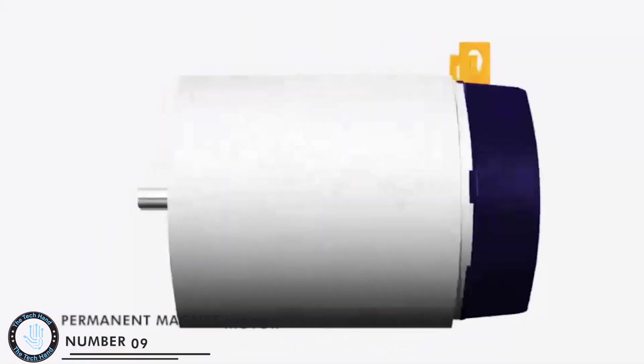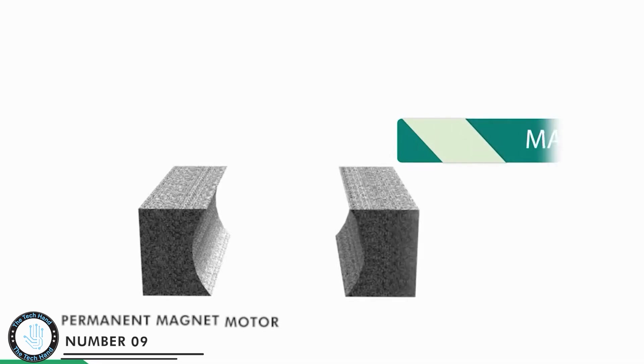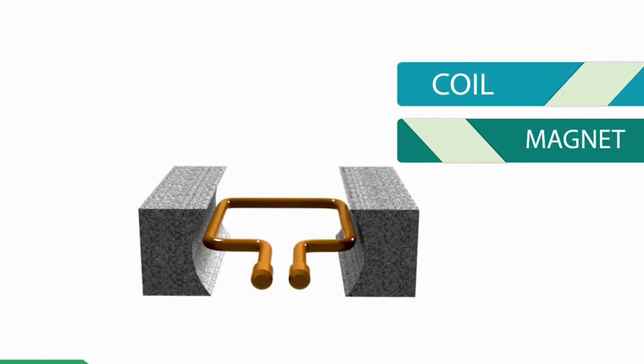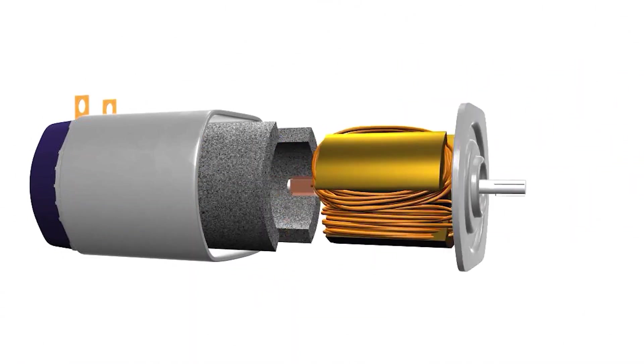Number 9: A Permanent Magnetic Motor. It is a type of electric motor that uses permanent magnets to produce the magnetic field needed to generate torque and rotate the motor's rotor.